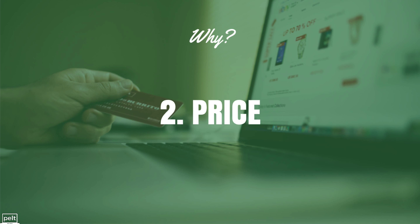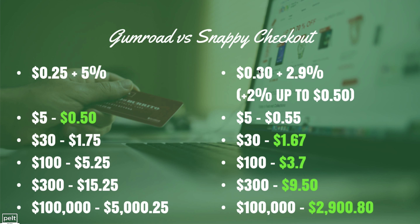They've also got a great pricing structure. They're integrated with Stripe so you pay your Stripe fees of $0.30 plus 2.9%, and then Snappy Checkout only charges 2% up to a maximum fee of $0.50. Places like Gumroad charge $0.25 plus 5% on everything. At $300 — the cost of my annual subscription — with Gumroad I was paying $15 in fees, whereas with Snappy Checkout I'm paying $9.50, saving over $5 every new customer.